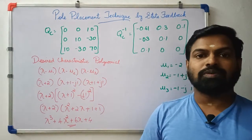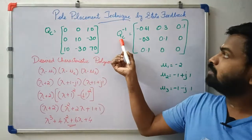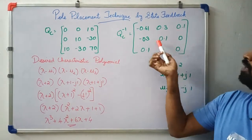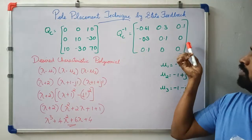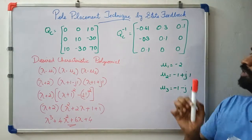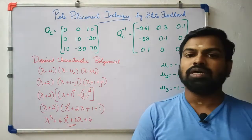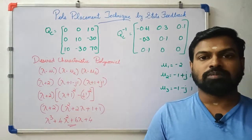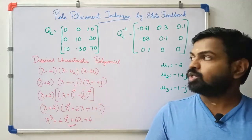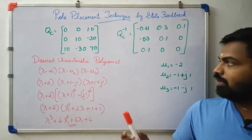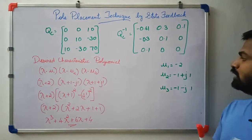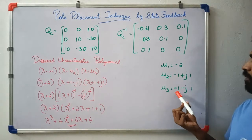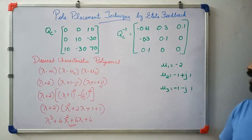We write the QC matrix as [0 0 10; 0 10 minus30; 10 minus30 70] and compute its inverse, giving approximately [0.61, 0.3, 0.1; 0.3, 0.1, 0; 0.1, 0, 0]. The desired closed-loop poles are mu1 = minus2, mu2 = minus1 plus j1, mu3 = minus1 minus j1.